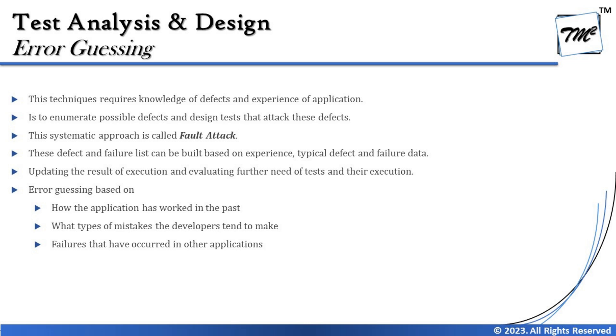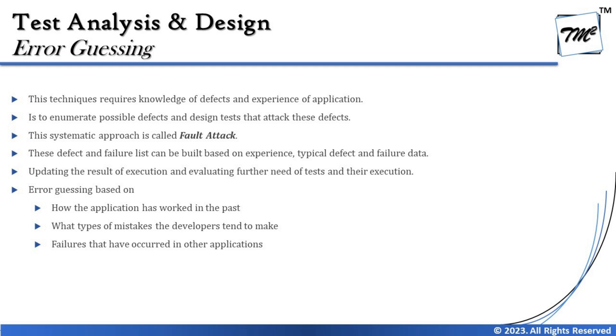Updating results and evaluating further needs can be done at a high level — a summarized record of what was done during execution and how it added value to the overall results. Error guessing is based on how the application has worked in the past, the types of mistakes developers tend to make, and failures that have occurred in other similar applications. Altogether, this technique is completely based on intuitions and guesses drawn from past experience. That's all for this tutorial — feel free to comment below with any questions. Keep learning, keep exploring, and happy learning!